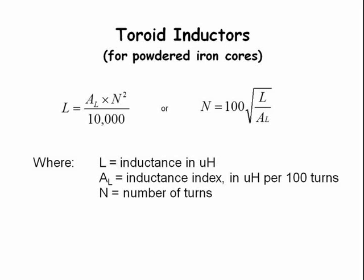Here is how you calculate the inductance of a powdered iron inductor. The formula is L equals A sub L times N squared divided by 10,000, or N equals 100 times the square root of L divided by A sub L.